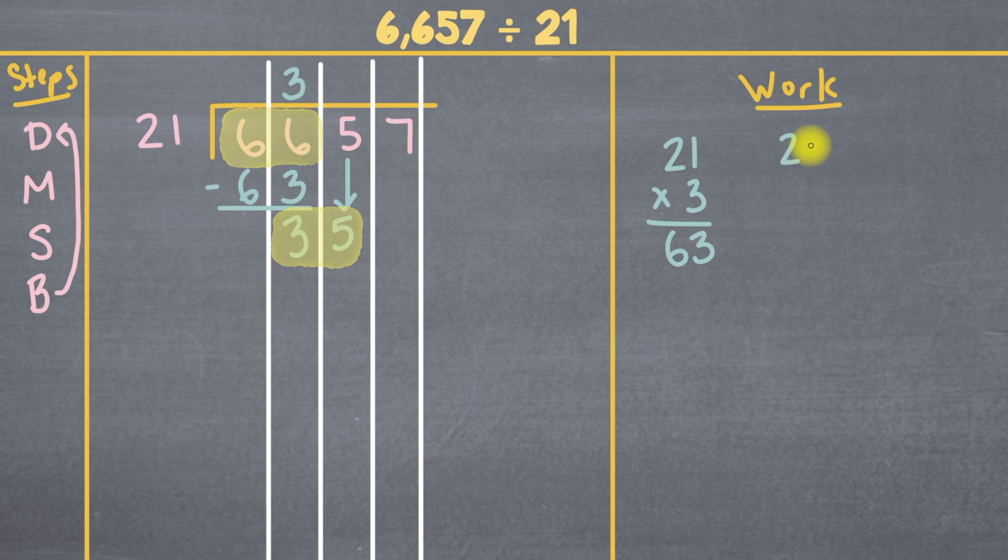So we've got 21 times 2. 2 times 1 is 2, and 2 times 2 is 4. 42 is way higher than 35, so that's not going to work. So we'll just use 1. And 1 times 21 is 21. We did our division by going into 35. We did our multiplication to find the 1, and 1 times 21 was 21.